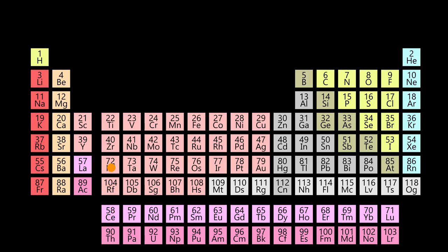In this video, we're going to look at trends for the periodic table of elements for dimensions like ionization energy, atomic and ionic radii, electron affinity, and electronegativity. To do so, we're going to start with a very fundamental idea in chemistry or physics, and that's Coulomb's law.